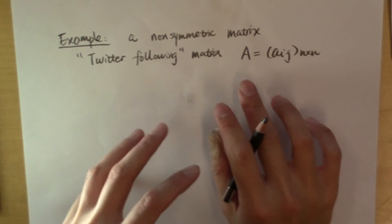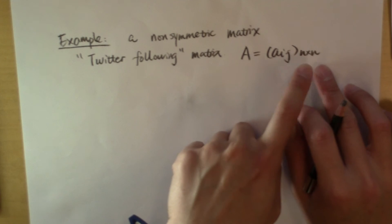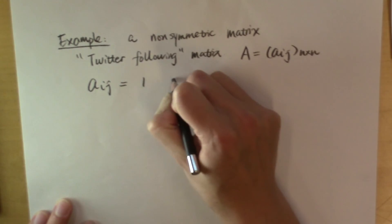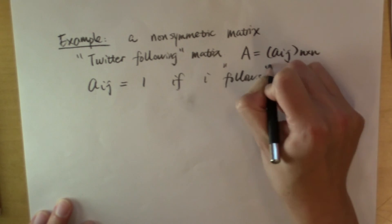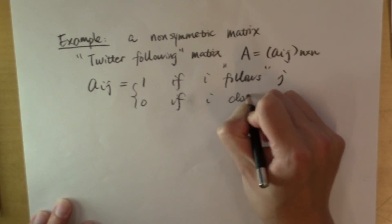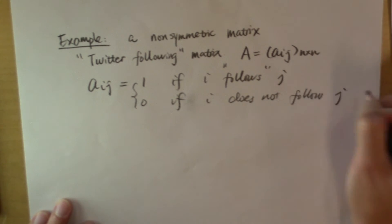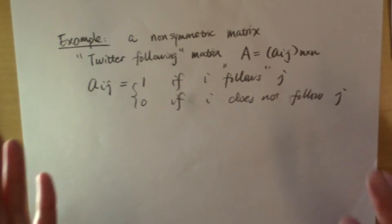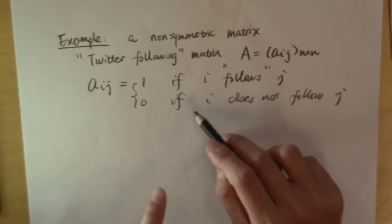For example, what if I have a matrix that represents the relationship of Twitter following? This is still going to be a square matrix, and it's defined as a sub ij is equal to 1 if person i follows person j on Twitter, but it's 0 if person i does not follow j, person j. In this case, this matrix may be symmetric, but it's not always symmetric, because i following j does not mean j is going to follow i.